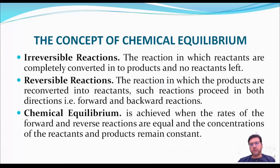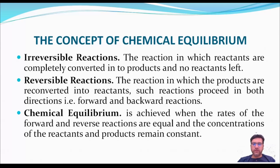Irreversible reactions are those in which reactants are completely converted into products. Reversible reactions are those in which the products are re-converted into reactants — that is, forward and backward reactions. Chemical equilibrium is achieved when the rates of forward and reverse reactions are equal and the concentration of the reactants and products remains constant.